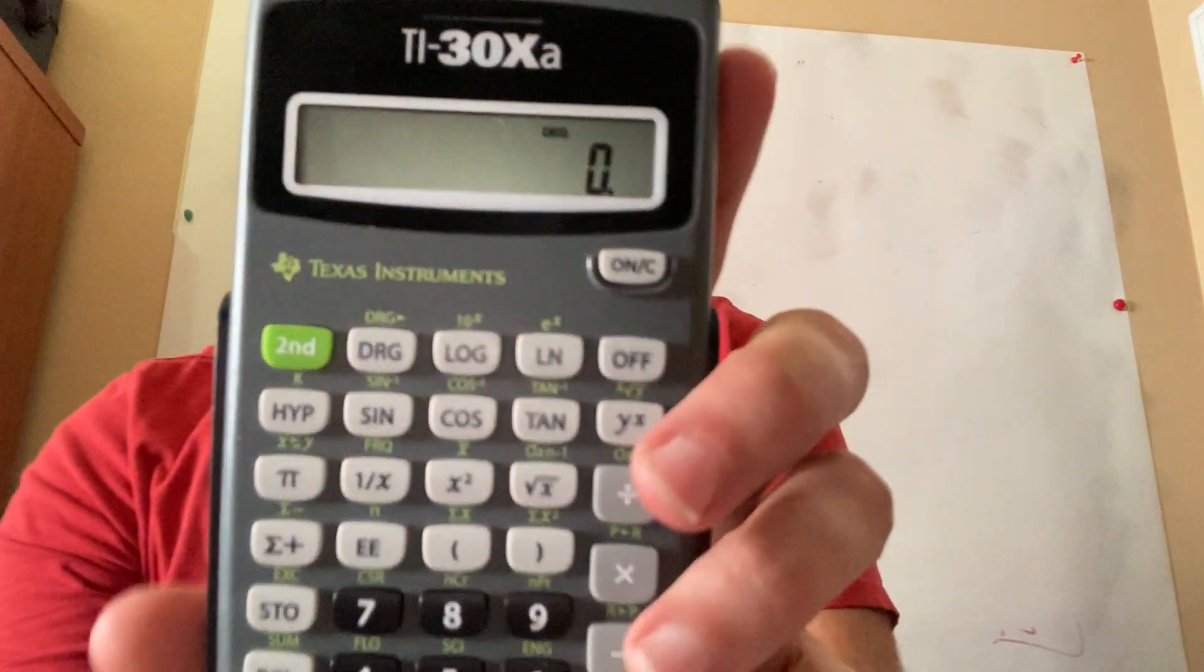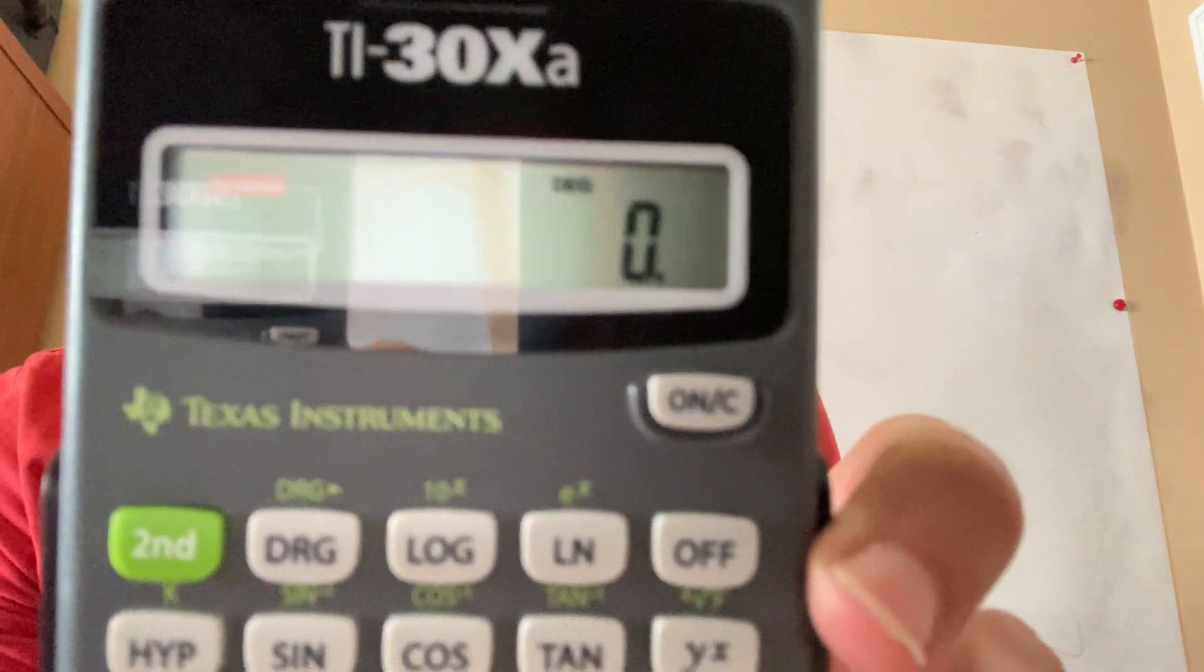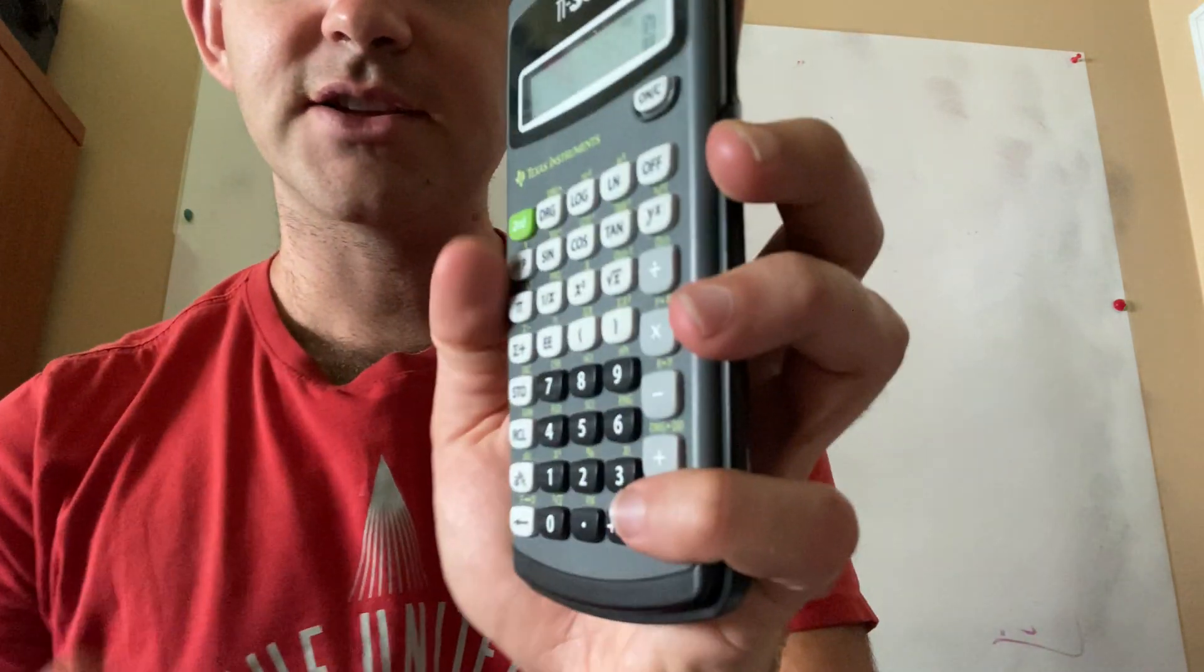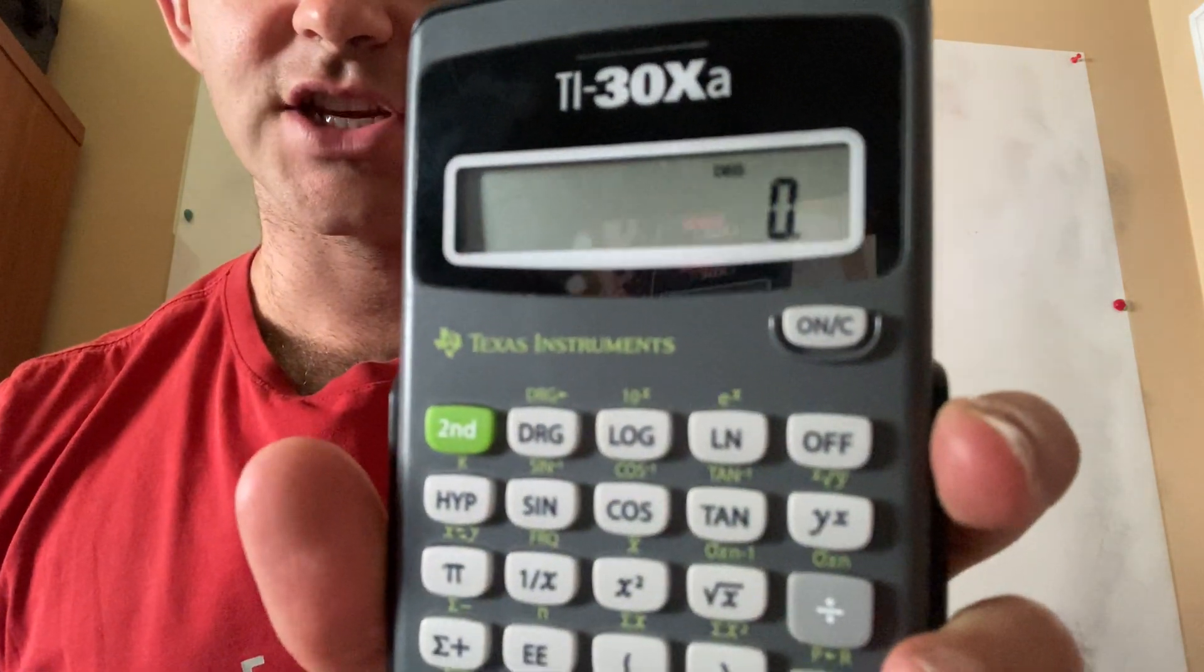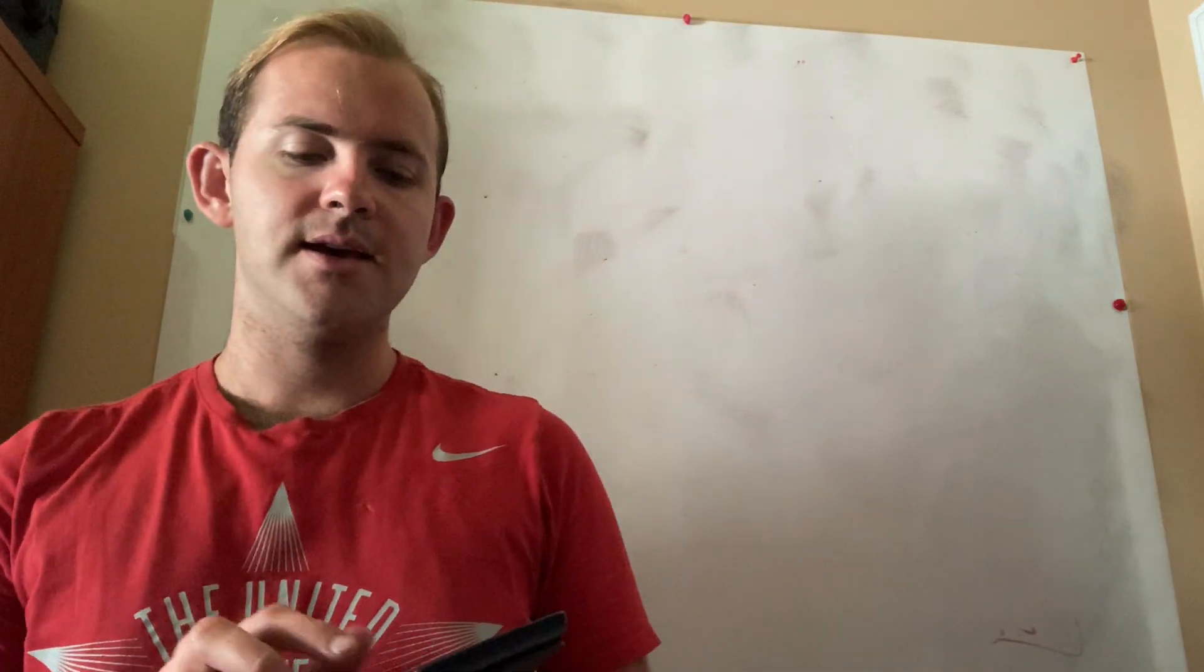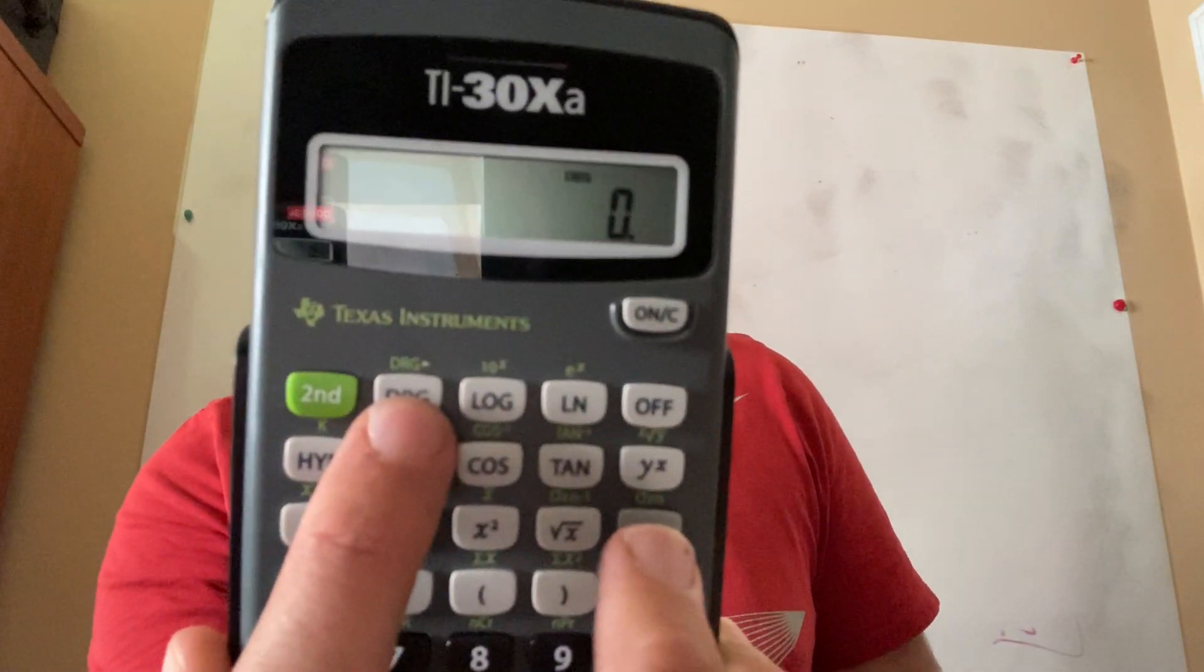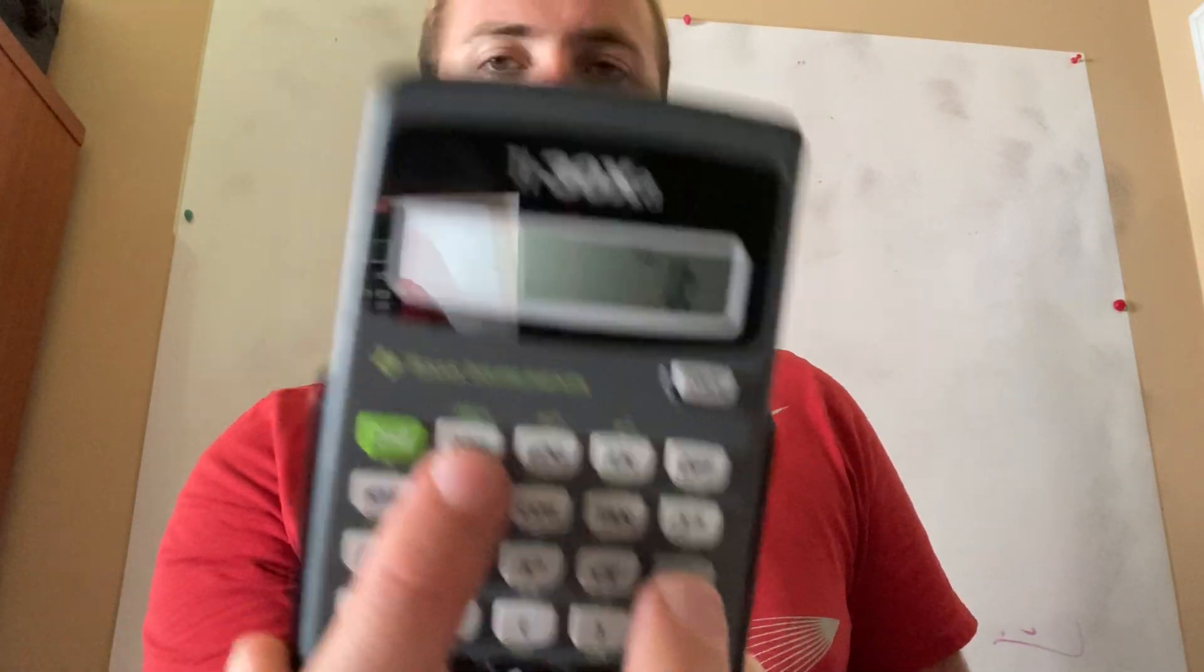For today you will need a calculator, and I want to go over something really quickly. Do you guys all see where it says, well on my calculator, maybe it's kind of hard to see, do you see the little three letters where it says D-E-G? That's important. You want it to say D-E-G. If it doesn't, just continue to press the D-R-G button until you see D-E-G.